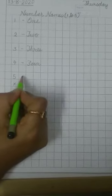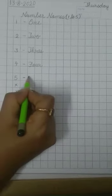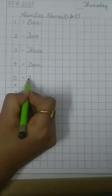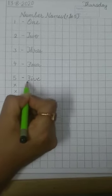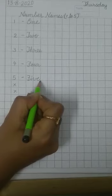Write number 5. Put a small dash here. Then write capital F like this. I V E. F I V E. 5.